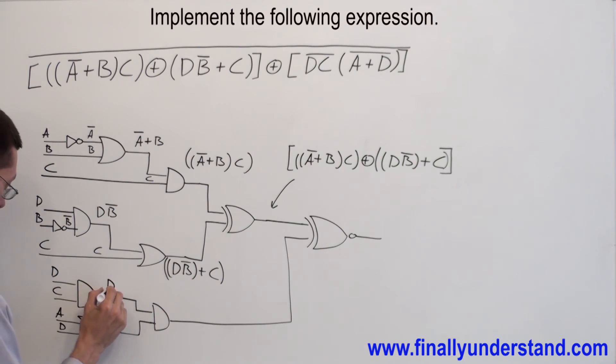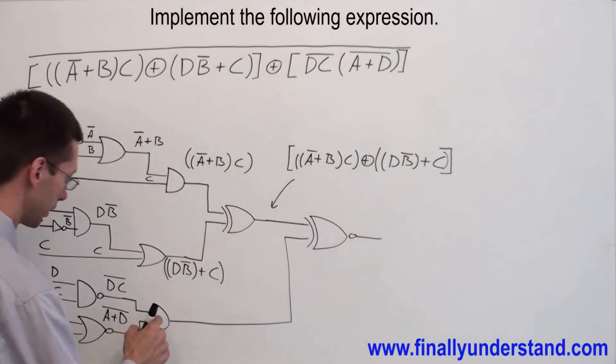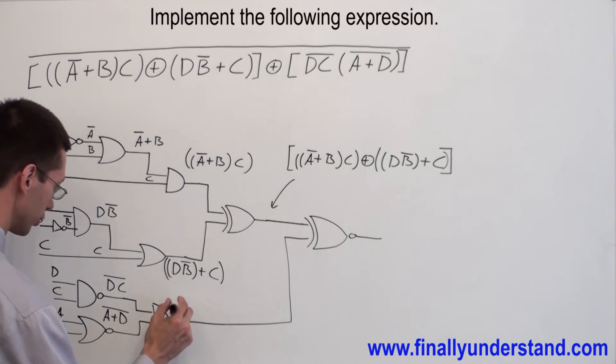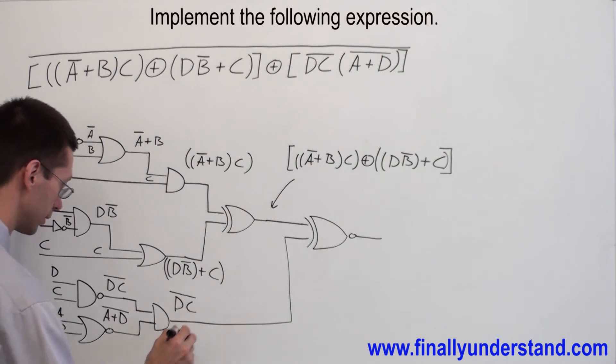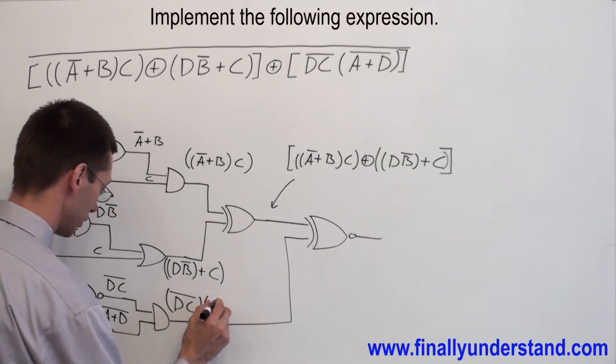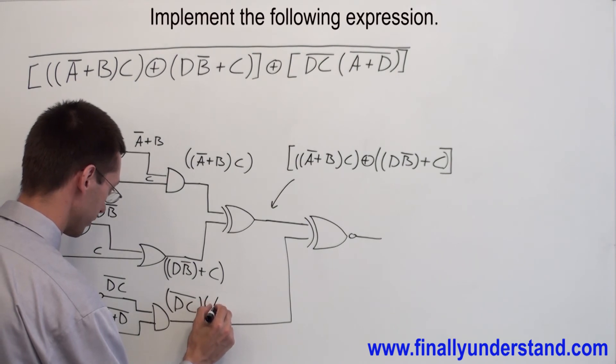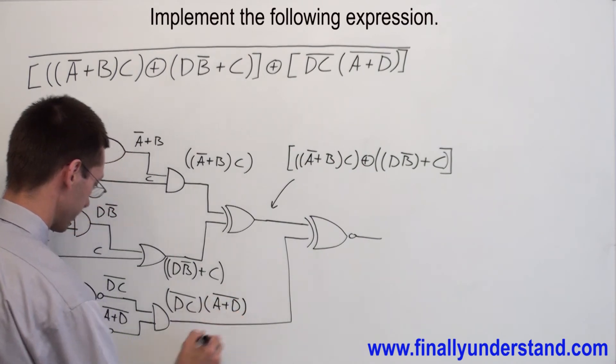So this is D, C node. And this is NOR gate, which is A NOR D. At the output of the AND gate, I'm going to have D, C NAND ANDed with NOR gate.